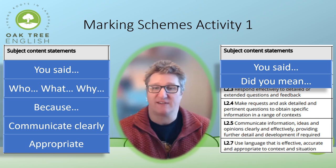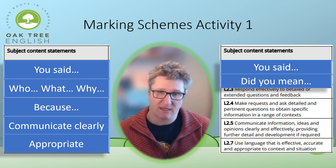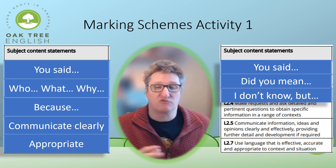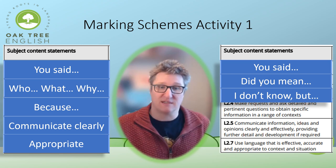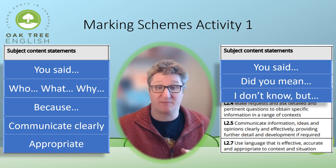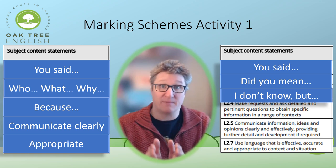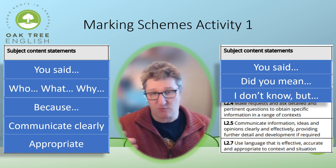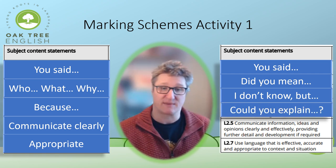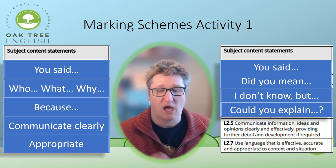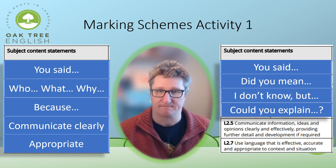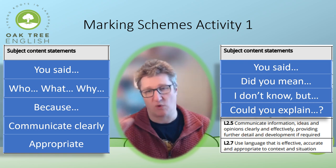The next level two criterion is to make requests and ask detailed, pertinent questions to obtain specific information in a range of contexts. You might say something like: 'Could you explain more about this particular aspect of your talk?' or 'Could you tell us your opinion about this aspect of the topic you're discussing?' You ask questions based on what you have just heard them say.